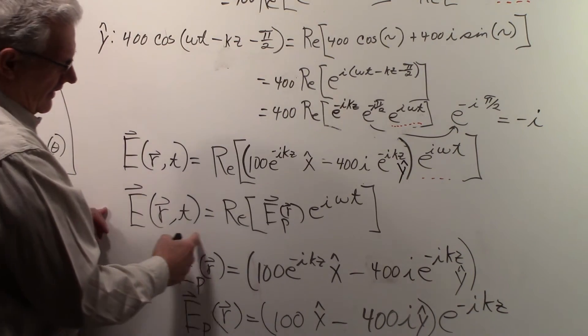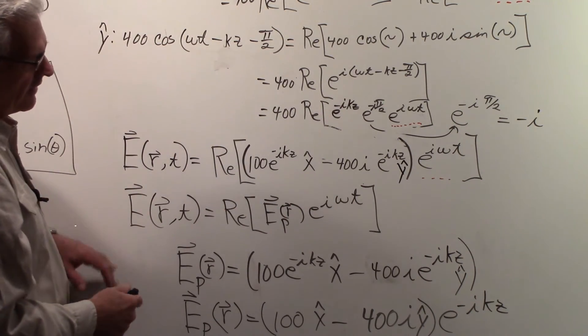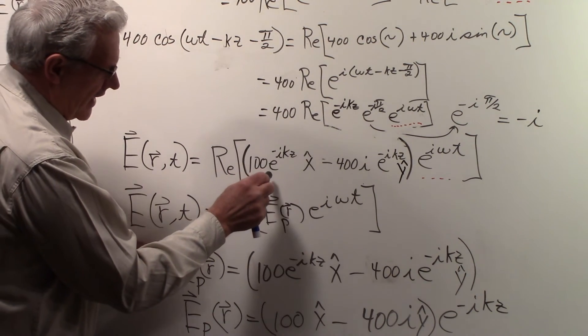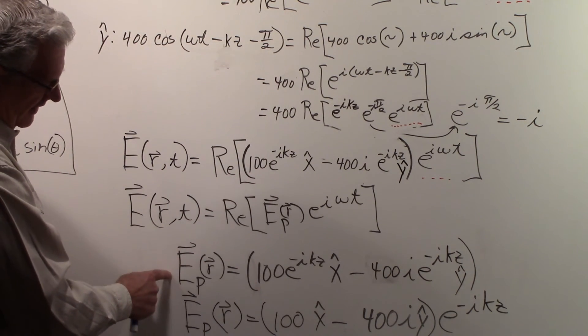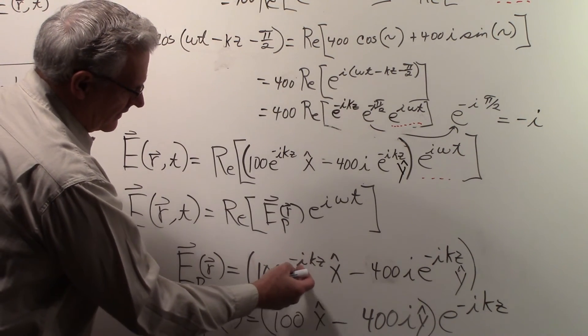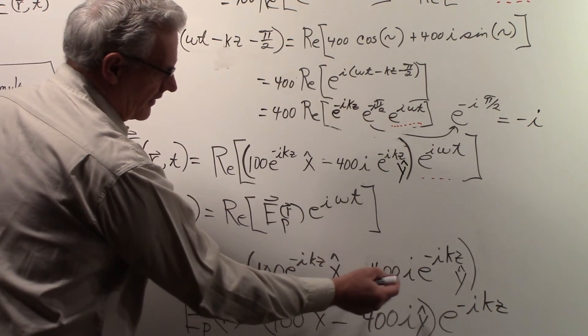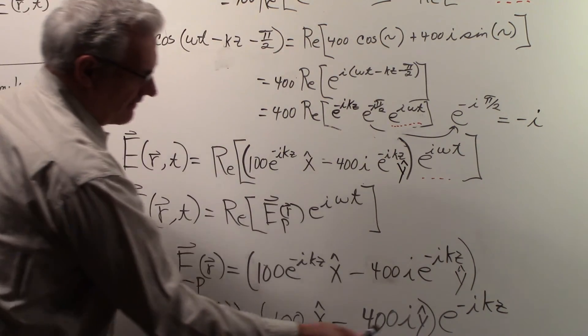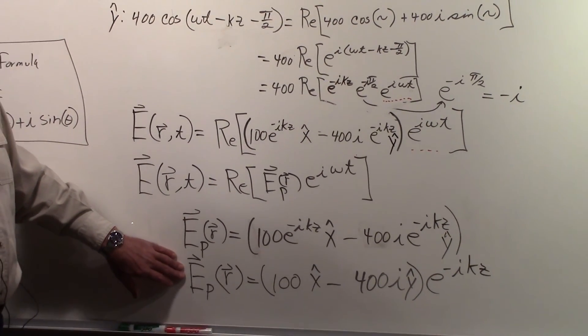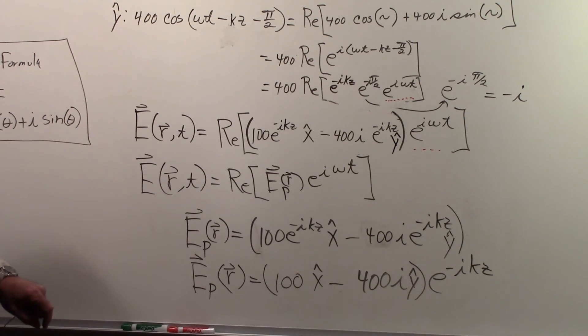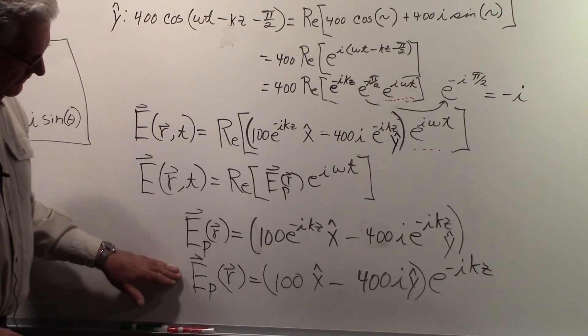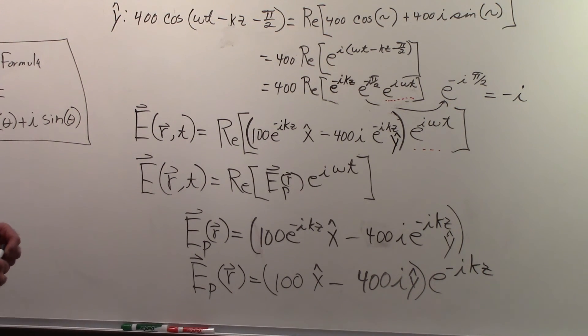So the general form of what we're looking at is this. You can see that comparing this, the general form, with what we actually have, you can see that the phasor form of our vector is going to be everything in the parentheses here. So it's the 100 e to the minus i k z x minus 400 i e to the minus i k z of y. We can factor out the e to the minus i k z. And so we can write the phasor form of our real vector this way. And you can see it is a complex quantity. So this phasor form is a complex vector.